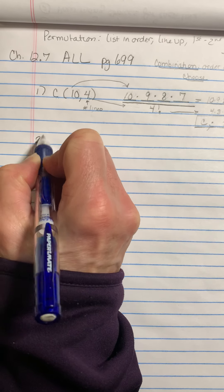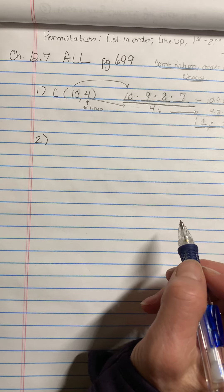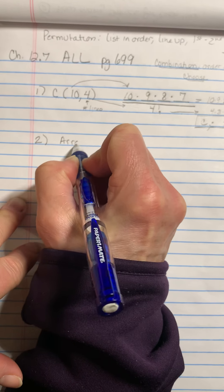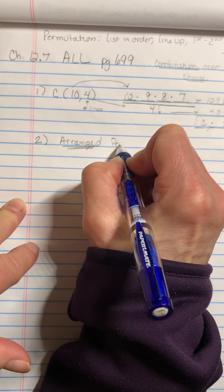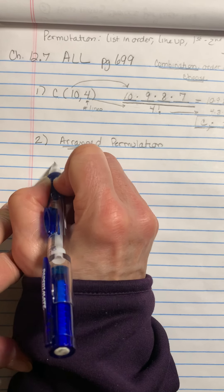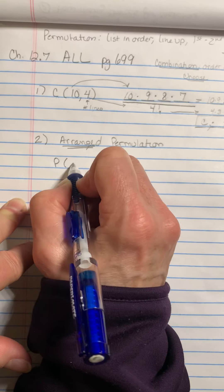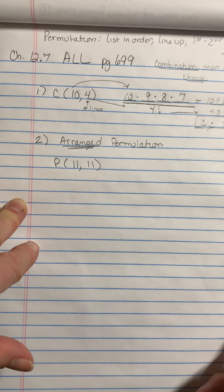And then we're going to move on to question number two. It says, how many ways can 11 photographs be arranged? The key word here is arranged. Arranged means it's a permutation. So that means I'm going to do a permutation of 11 photographs and you're arranging all 11 of them.